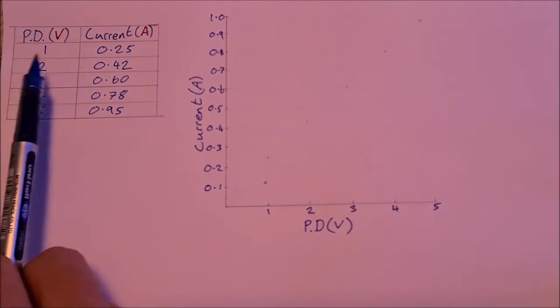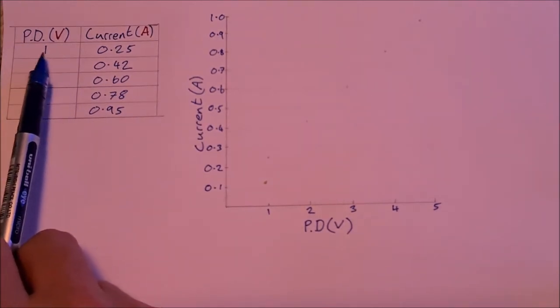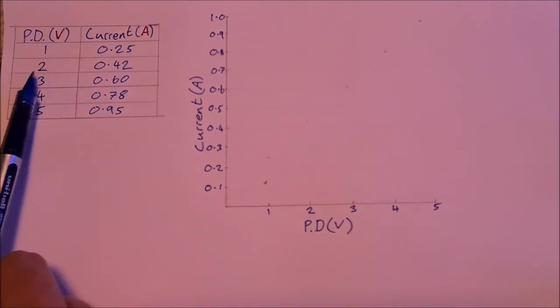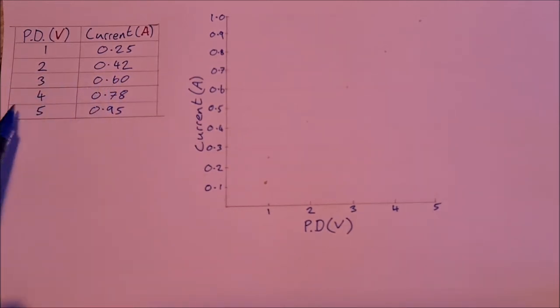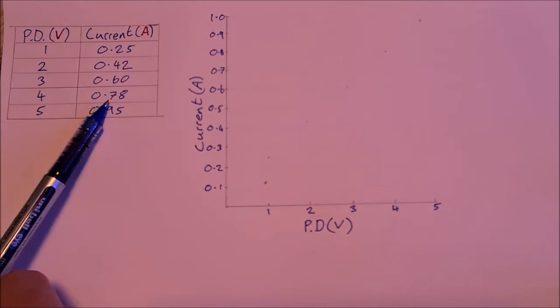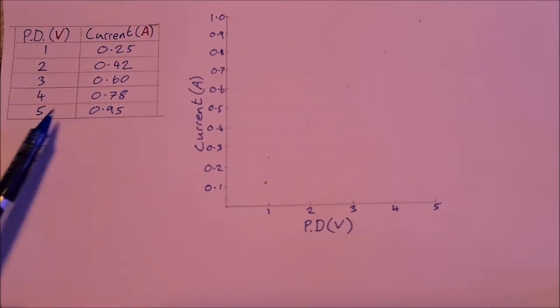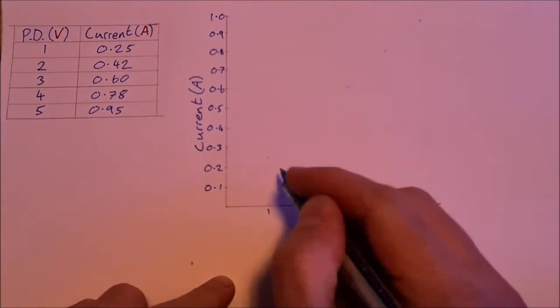Okay, so a quick analysis of the results. Here's our table. We had for one volt, 0.25 amps; for two volts, 0.42 amps; for three volts, 0.95 amps. So we're going to plot that on the graph here now.